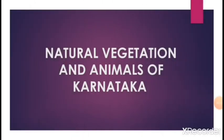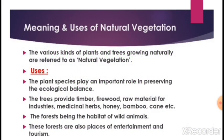Now let us go to the last topic: Natural Vegetation and Animal Resource of Karnataka. Natural vegetation means various kinds of plants and trees growing naturally — not grown by human beings. This topic includes not only types of forest but also grassland and shrubs, which are also part of natural vegetation.